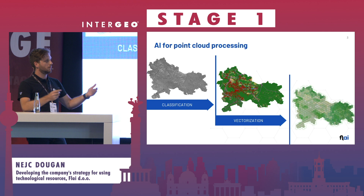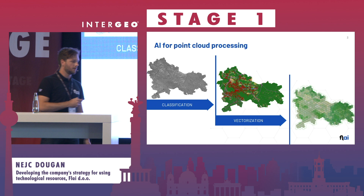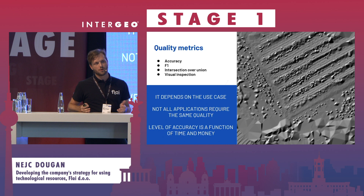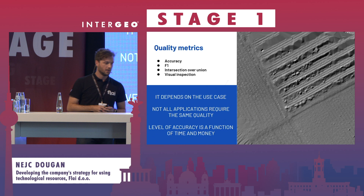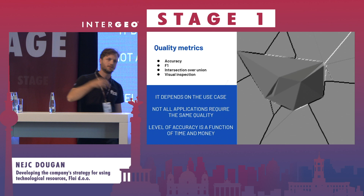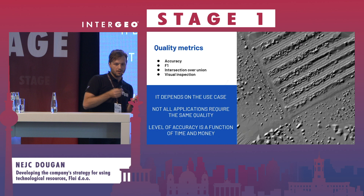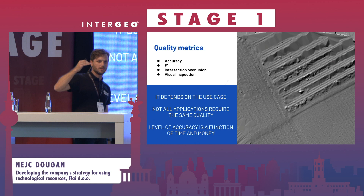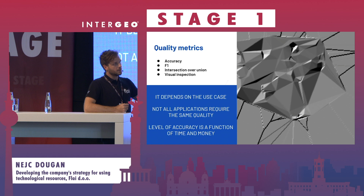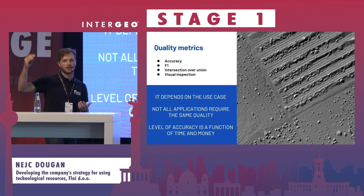Before we jump into the use cases, let's talk about quality metrics. It is really important to consider what quality metric should be used for our use cases — we can use accuracy, F1 scores, or intersection over union. It is really critical that before going into projects, we determine what is the most suitable metric and what threshold we want to achieve. For some use cases, speed of processing or delivery is more important than absolute accuracy.